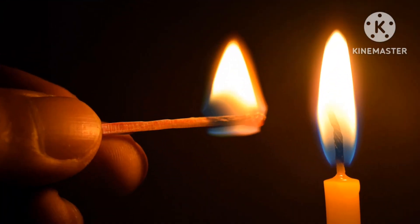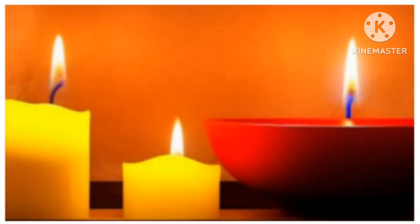If you light the wick of a candle with a burning matchstick, it burns with a flame. But how is the flame produced? When a candle is lit, the wax around the wick melts. This wax rises up through the wick and vaporizes. If you look carefully, you can see the wax melting and going up the wick. The vapors burn to produce the flame. Thus, the flame is produced by the combustion of wax vapors in oxygen.